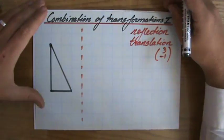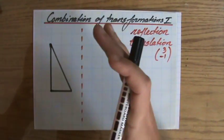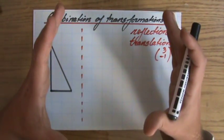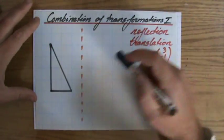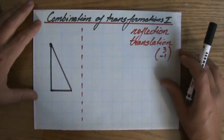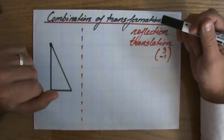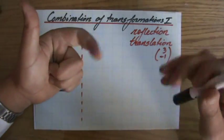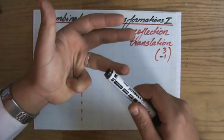So I've shown you in the previous videos that a transformation changes the position or the shape, or the position and the shape sometimes, of a particular object, for instance this triangle. And I've shown you different types of transformations. We had a reflection, we had a rotation, we had a translation, and then we had an enlargement.